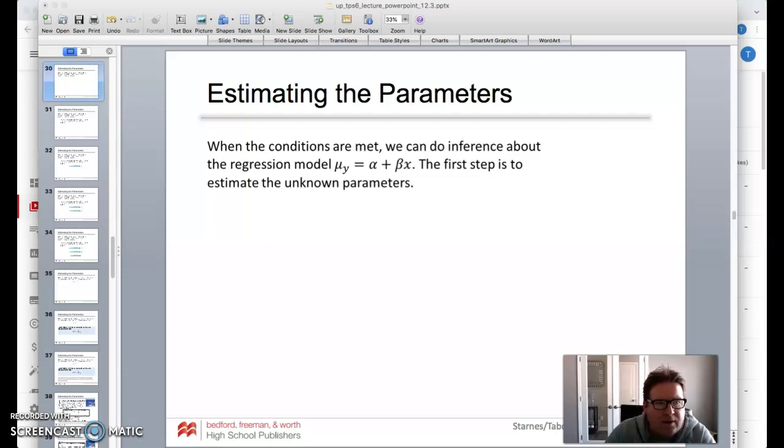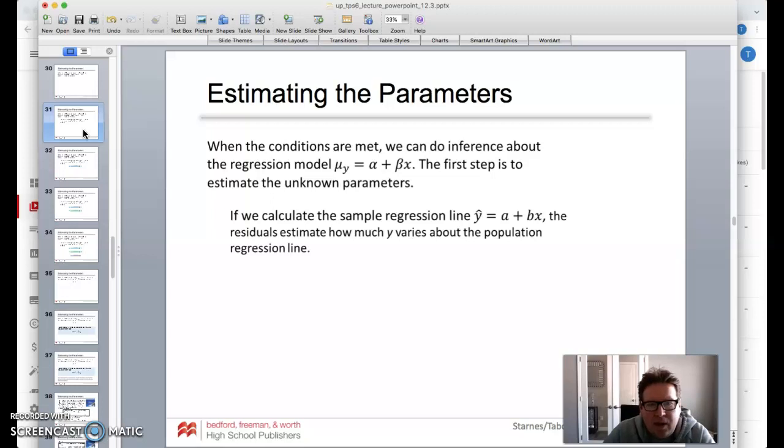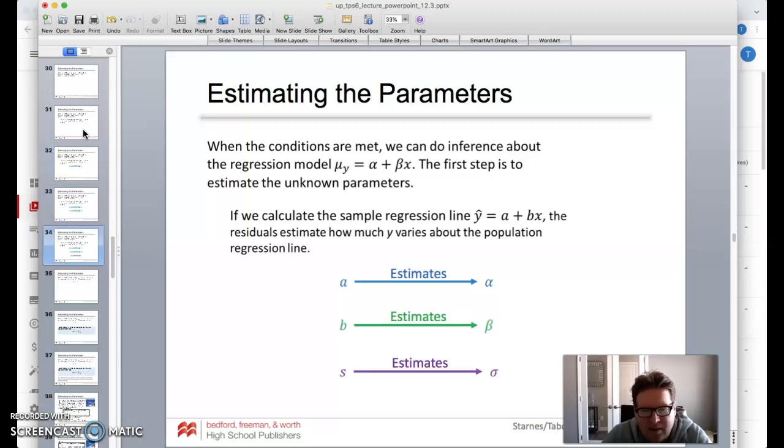If we calculate the sample regression line y hat equals a plus bx, the residuals estimate how much y varies about the population regression line. So a estimates alpha, b estimates beta, and s represents sigma.